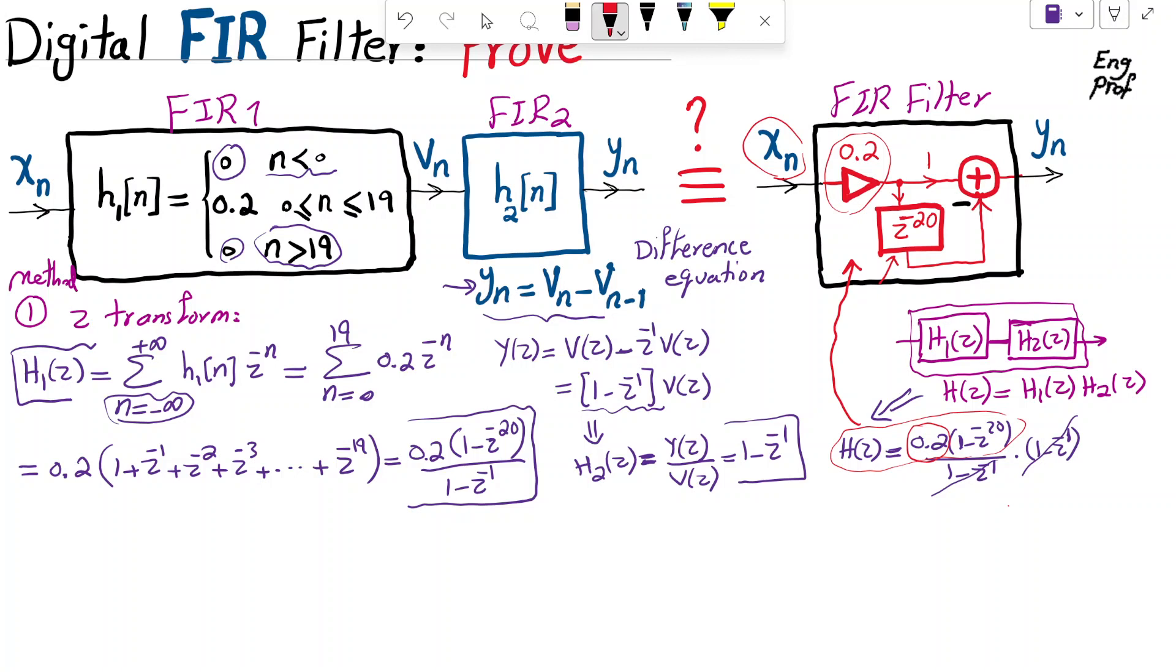What is method 2? For the second method, I'm not going to use the Z transform. It will be as simple as saying it this way. We see that H1 of N is, as we discussed in the method 1, is equal to 0.2 for indices between 0 and 19, and is 0 outside.